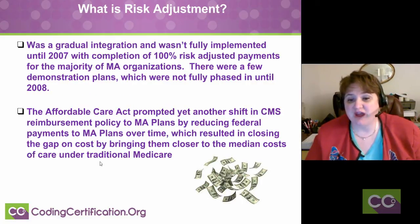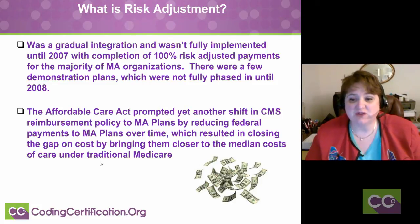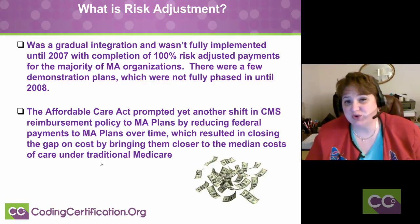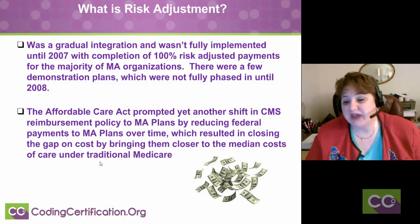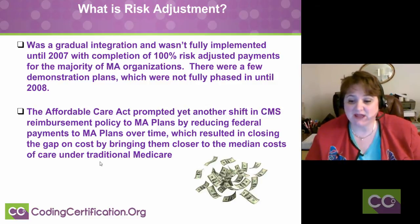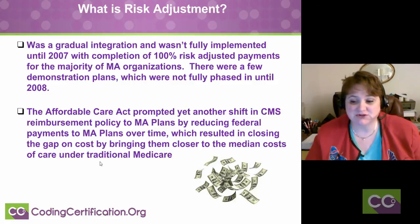There was a gradual integration, and it wasn't fully implemented until 2007, with a completion of 100% risk adjustment payments for the majority of the MA organizations. There were a few demonstration plans which were not fully phased in until actually 2008. The Affordable Care Act prompted yet another shift in CMS reimbursement policy to MA plans by reducing federal payments to MA plans over time, which resulted in closing the gap on costs by bringing them closer to the median cost of care under traditional Medicare.